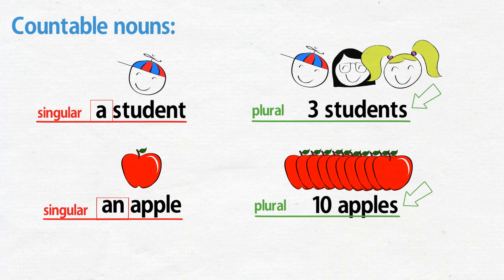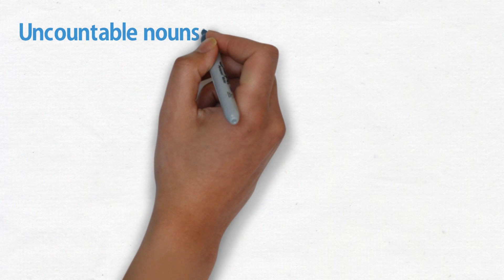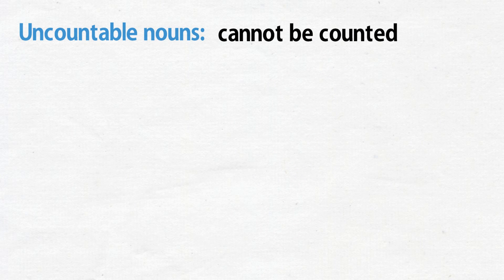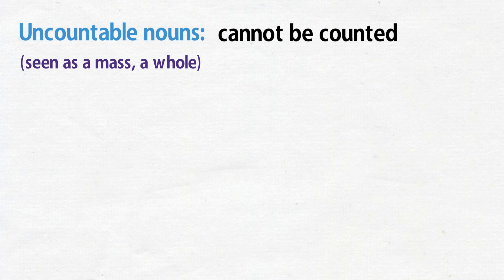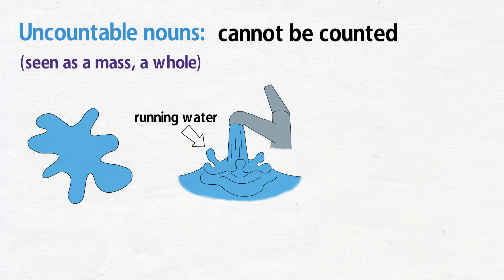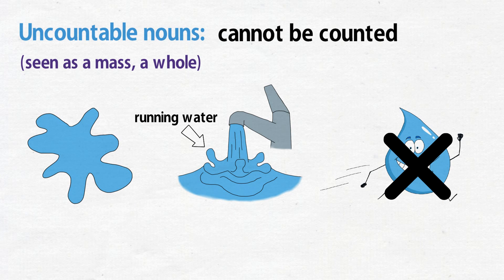Now uncountable nouns cannot be counted because some things in the English language are seen as a mass or as a whole. Think about water for a minute. Water is everywhere. If you turn your sink on, the water will start running—well, not actually running, that's just something we say. And water can run like that for a very long time. Because it cannot be separated into one water, two waters, that makes it uncountable.